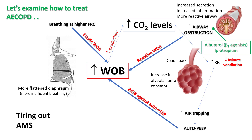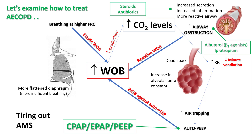The first thing is to reverse the underlying condition: give bronchodilators such as albuterol and ipratropium, and steroids and antibiotics to curb secretion and inflammation. The most important thing that helps this patient is countering their auto-PEEP — you can use CPAP or expiratory PAP.